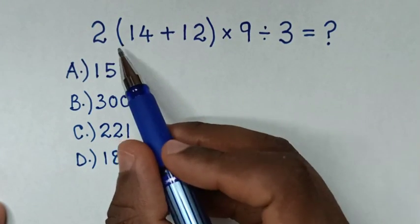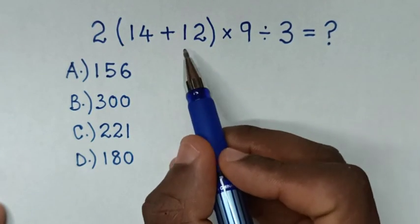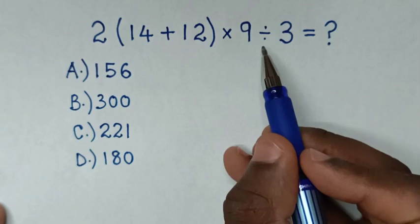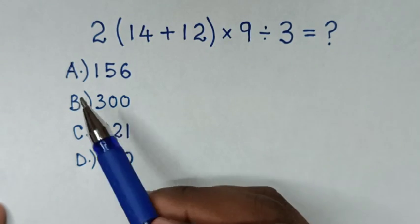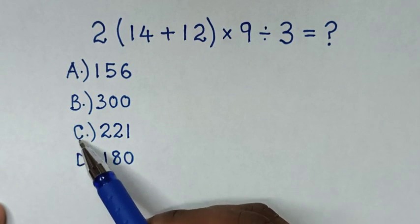Hello, how to solve 2(14 + 12) × 9 ÷ 3 by selecting the answers in A, B, C, or D.